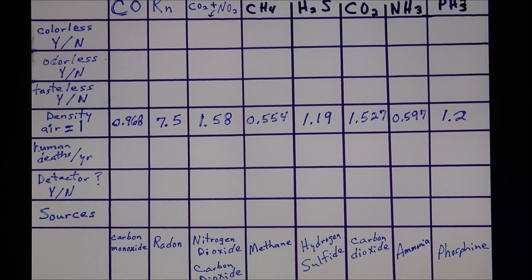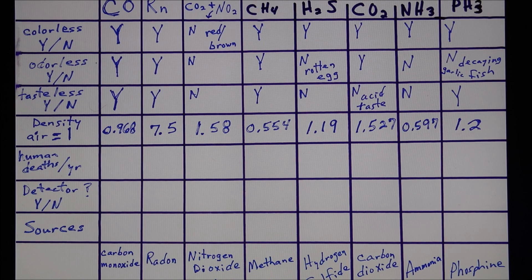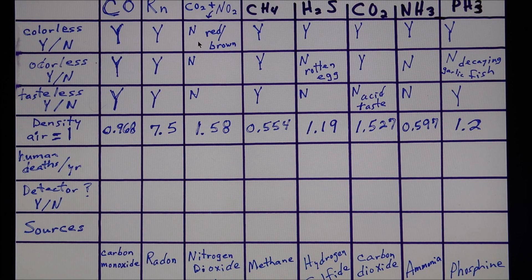Let's fill out more of the top part of the table. 'Colorless' — Y means yes, it's colorless, and most of the gases are colorless. The silo gas is kind of a reddish brown, but it's so dangerous that by the time you see it, it may be too late.